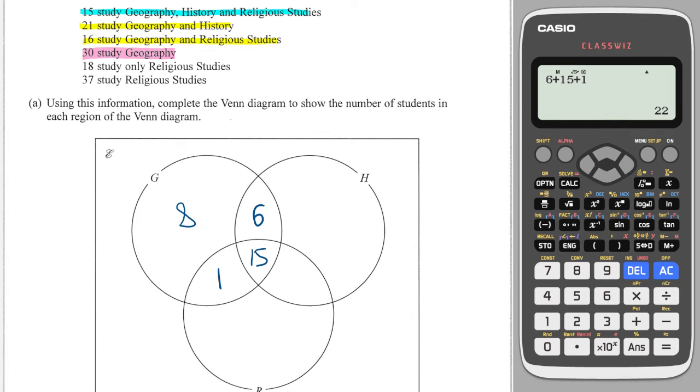We can see that 18 study only religious, so that goes in there because that's the section of people that only study religious studies. Overall, 37 people study religious studies, so let's add up how many we've got inside that circle already: 18, 15, and 1, which gives me 34, so I need 3 more left over for the final section to make 37. Finally, we know that everyone studies at least 1 and the total number of people were 65, so to work out the final segment I will do 65 minus 3 minus 15 minus 6 minus 8 minus 1 minus 18, and that is 14.